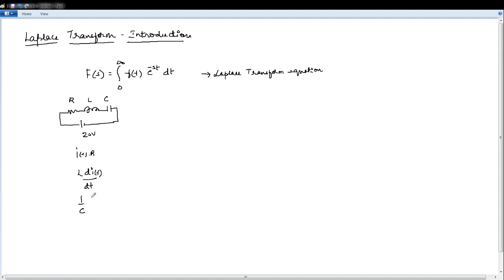And voltage across capacitor is 1 by C integral minus infinity to infinity I of T dt. So these are the three equations of the voltages across individual elements R, L and C.